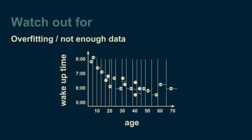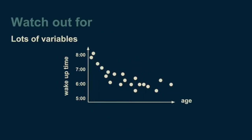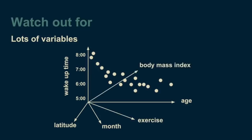Ideally, we want a decision tree to capture the underlying trend, but not to capture the noise. One way to safeguard against this is to make sure that there are more than a handful of data points in each leaf of our decision tree. That way, any noise will be able to average itself out. Another thing to watch out for is having lots of variables. We started with the one-dimensional regression tree, then included month data to create a two-dimensional regression tree. Decision trees don't care how many dimensions we have. We could also add latitude, the amount of exercise someone gets on a given day, their body mass index, and any other variables that we think might be relevant.